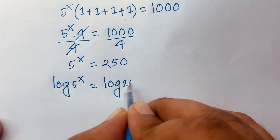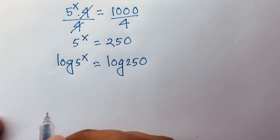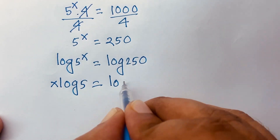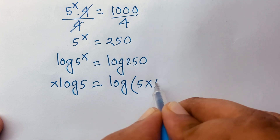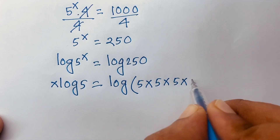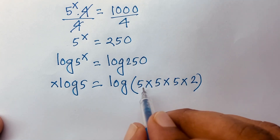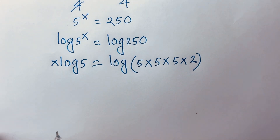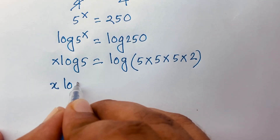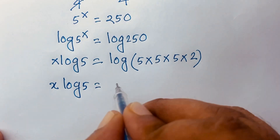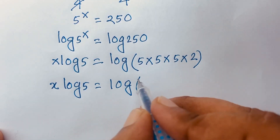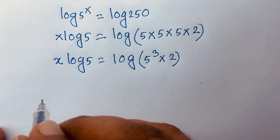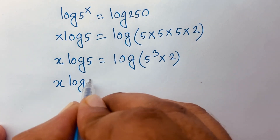This gives x times log 5 equals log 250. Now, 250 equals 5 times 5 times 5 times 2 — that is, 5 squared is 25, times 10 gives 250. So I can write x log 5 equals log(5 to the power 3 times 2).